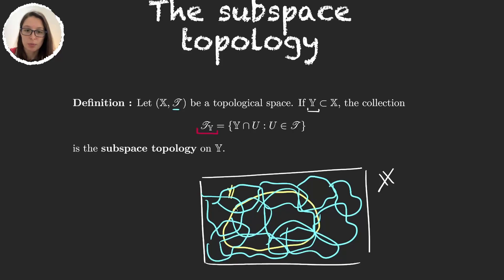So for example, I can take this element here. This is going to be one of the elements in 𝒯_Y. I could take, for example, this other one. The intersection of this big element with my set gives me this. But there are many others. So I have this other one.